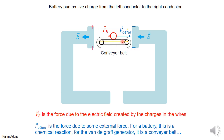This is not fantasy — the Van de Graaff generator behaves exactly like this. It's a mechanical picture to help imagine how things happen. The conveyor belt pumps negative charges from one side and deposits them on the other side.